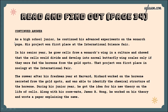As a high school junior, he continued advanced experiments on monarch pupae, and his project won first place at an international fair. He grew cells from a monarch wing in a culture and showed that the cells would divide and develop into normal butterfly wing scales only if they were fed the hormone from the gold spots — that project also won first place in zoology at the international fair. He was able to identify the chemical structure of the hormone. During his junior year, he got the idea for his new theory on the life of cells, and along with his roommate James R. Wong, he worked on and wrote a paper explaining the theory.